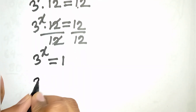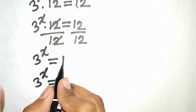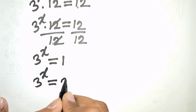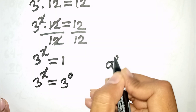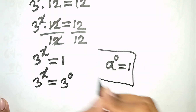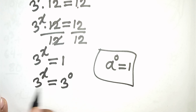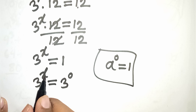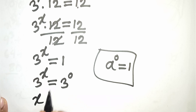We can write 3 power x equals 1, which is the same as 3 power 0, according to the formula a power 0 is equal to 1. So 1 is the same as 3 power 0. Since both sides have the same base 3, the bases cancel and power x equals power 0, so x is equal to 0.